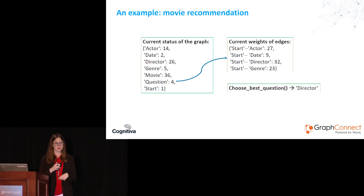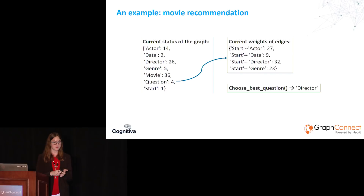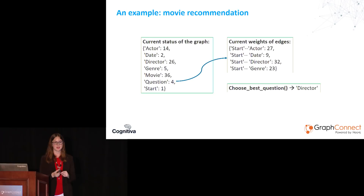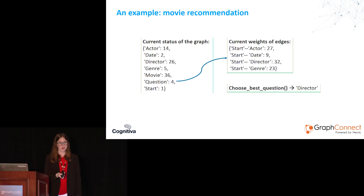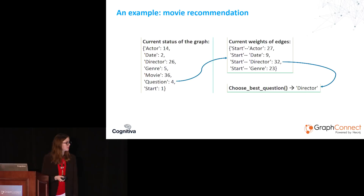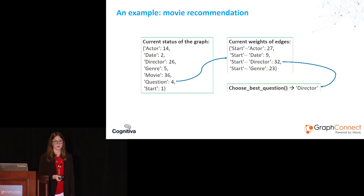Since we have four possible questions, we calculate the edge weights between 'start' and the question vertices using our metric. We calculate the number of possible movie recommendations that would be ruled out if we asked about each attribute: the edge weight between start and actor is 27, between start and date is 9, between start and director is 32, and between start and genre is 23. Since we are looking for the maximum, the best question to choose in this first step is the director. This is what Watson will ask the user.